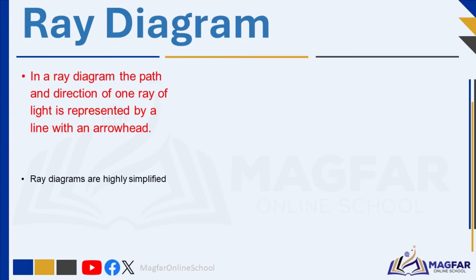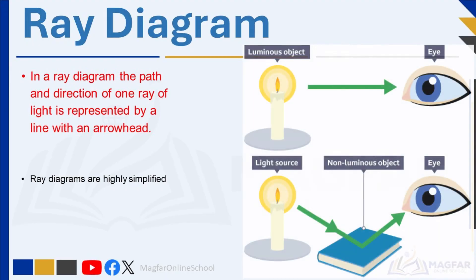A ray diagram is a simplified way of showing how light is radiated from a luminous object. The path and direction of one ray of light is represented by a line with an arrowhead. Ray diagrams are highly simplified since they only show a few of the millions of light rays that shine from a source, as light rays radiate in all directions.